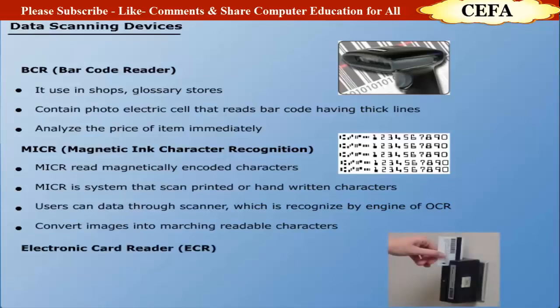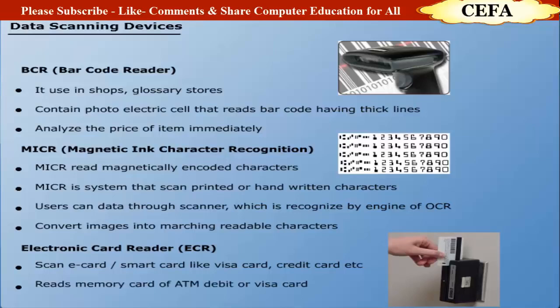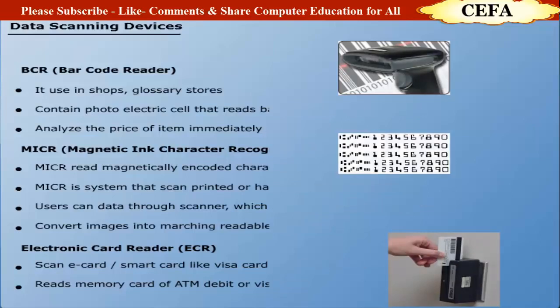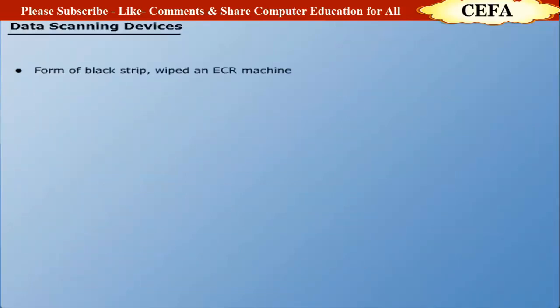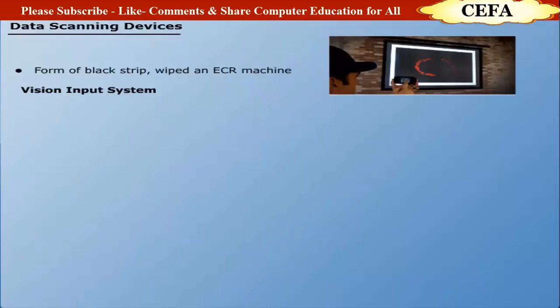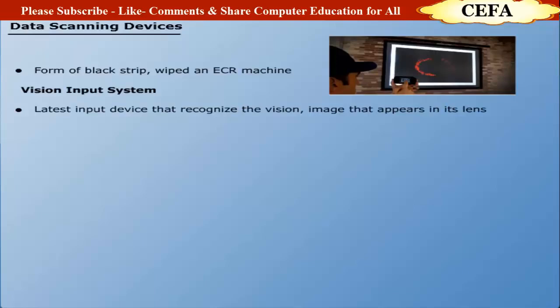Electronic Card Reader (ECR): An electronic card reader is used to scan e-cards and smart cards like Visa cards and bank credit cards. It reads the memory card of ATM, debit, or Visa cards. The memory card is in the form of a black strip which is swiped through an electronic card reader machine. Vision Input System: One of the latest input devices, it recognizes visual images appearing in the range of its lens and is specially used to design industrial robots.